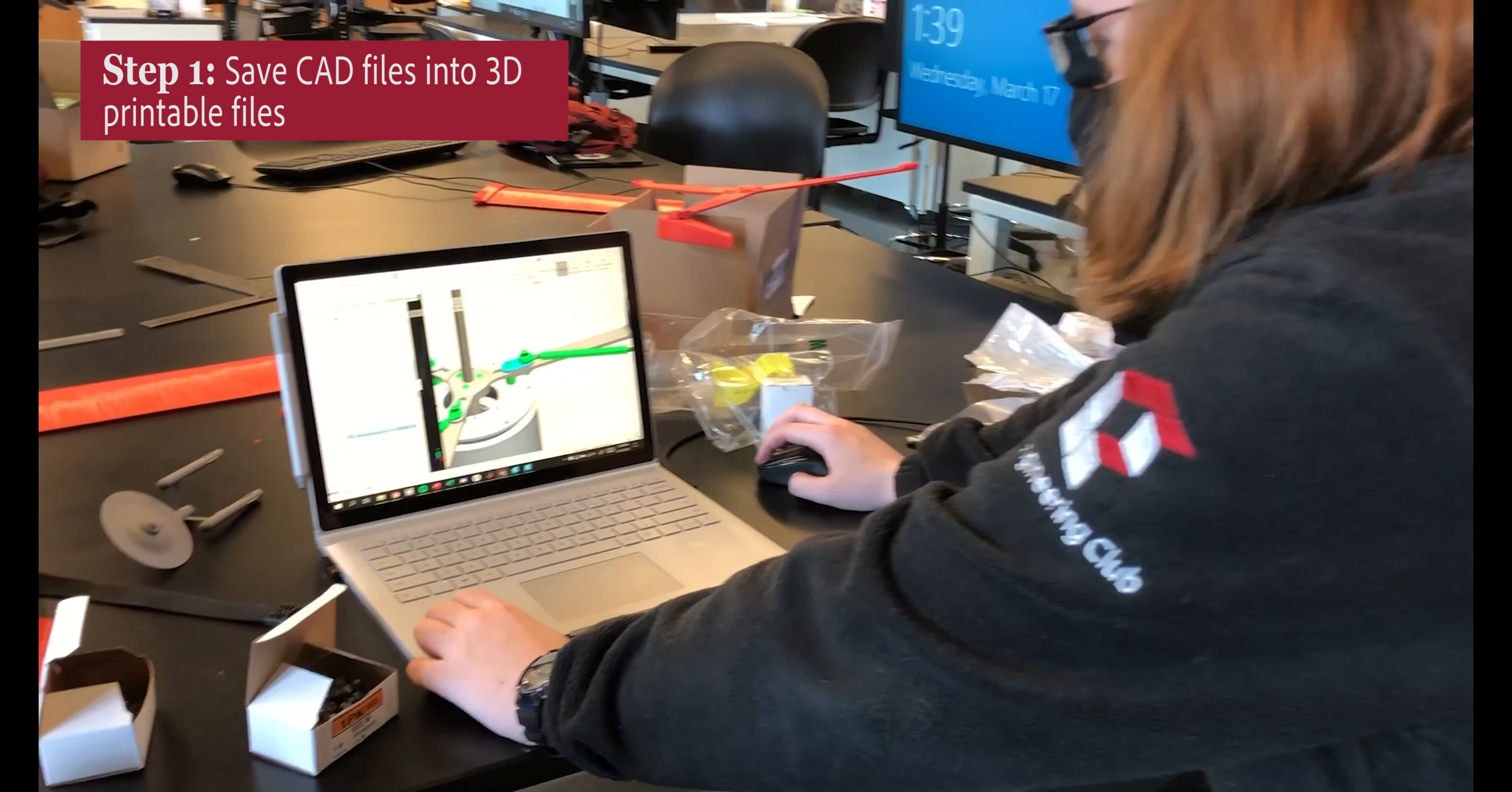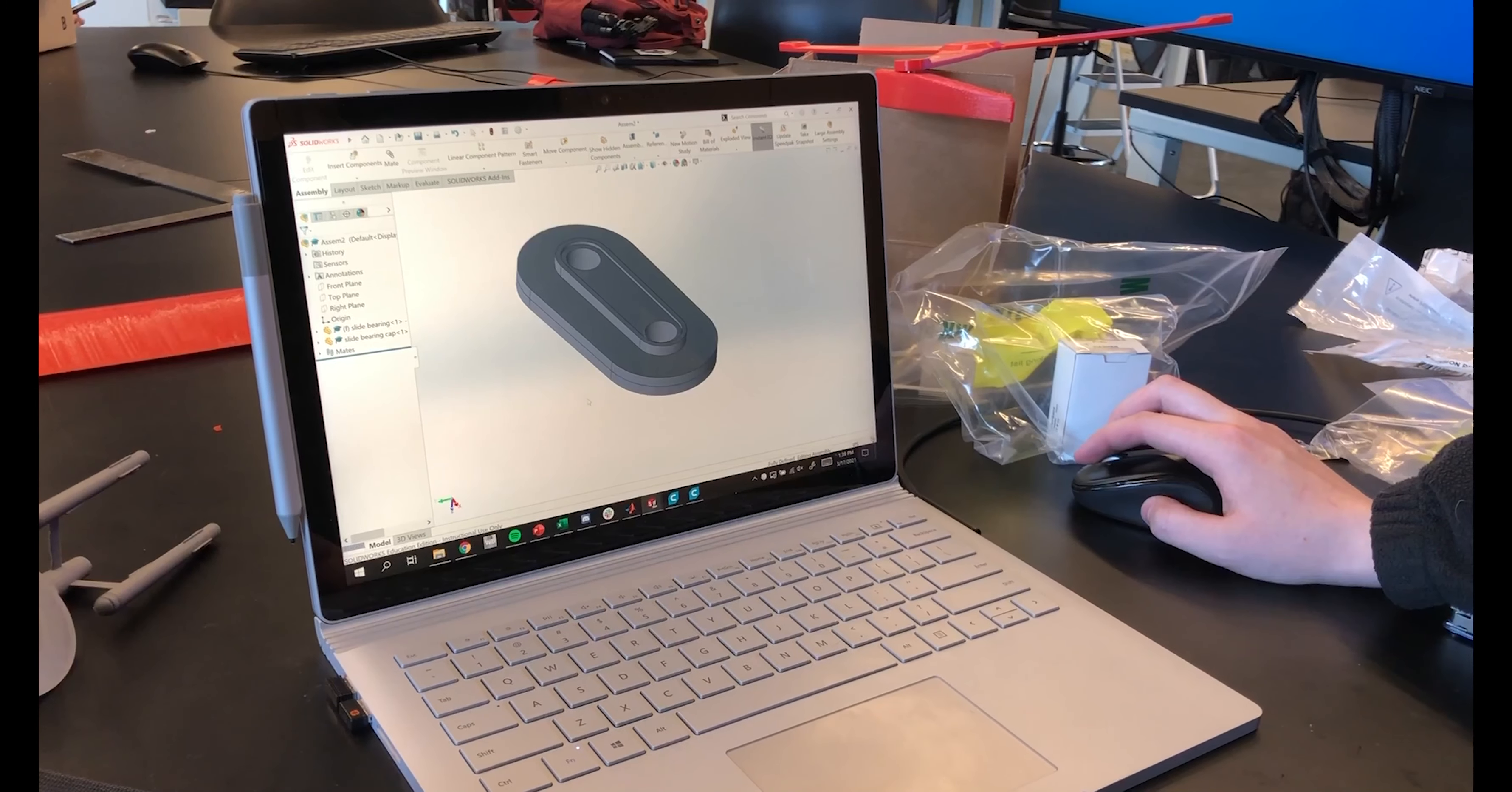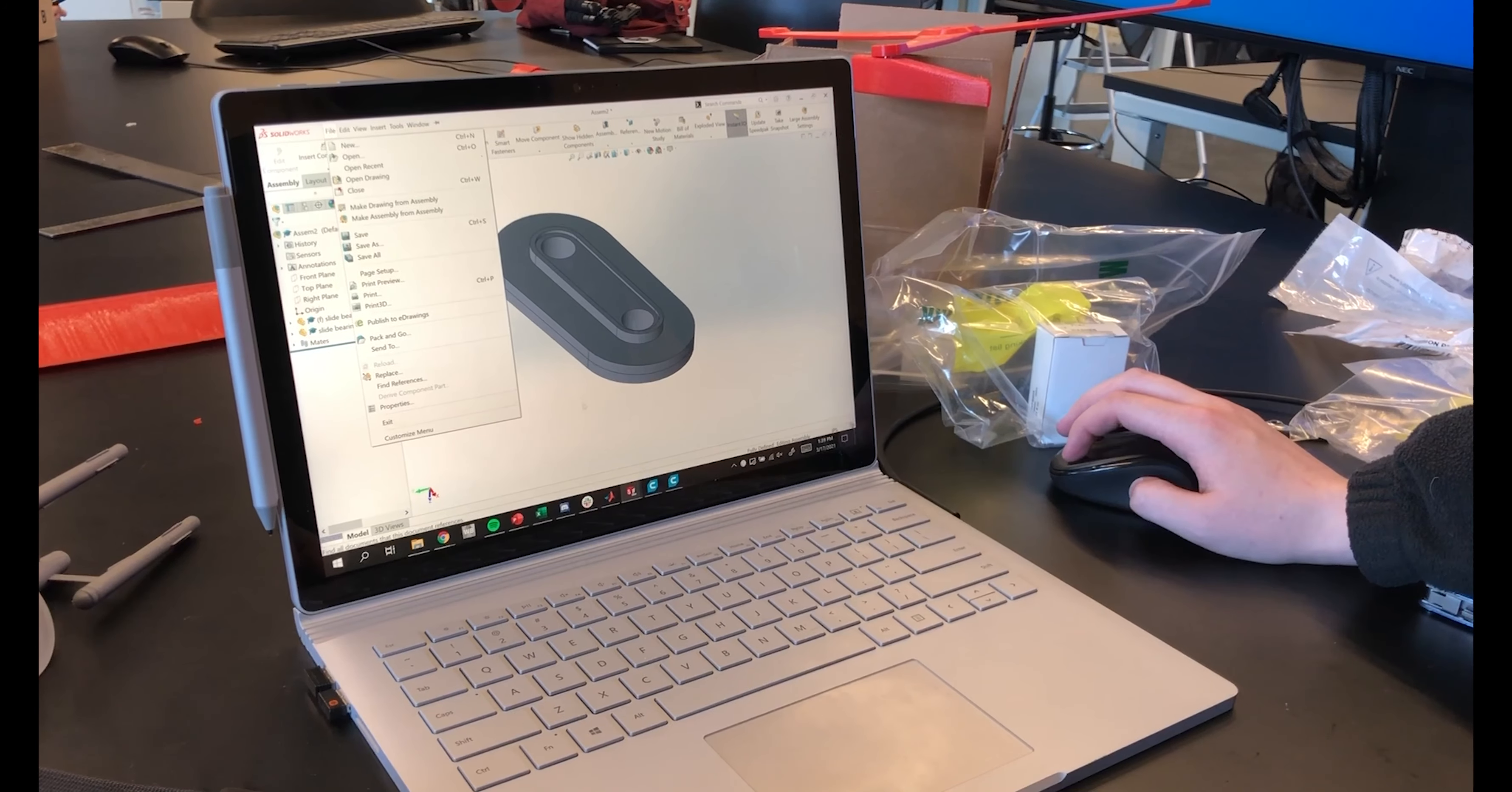So I want to print this part, so I select it and then I can isolate it over here. And then I convert this to a type of file that the printer can read, it's called an STL, and then I send it over to this program.